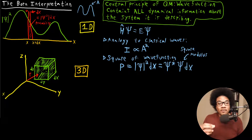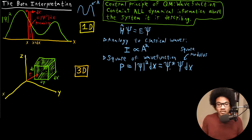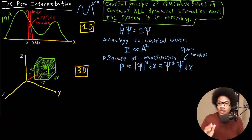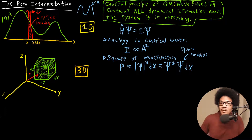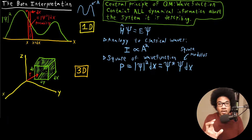So you would look at the wave function, you would square it, you get this probability density, you figure out which region of space you're interested in, and then you integrate over that region of space to figure out the probability.